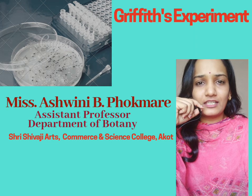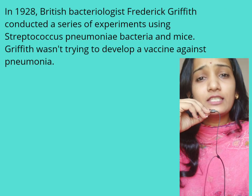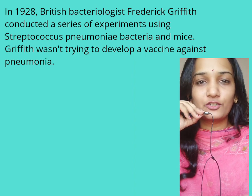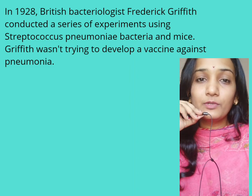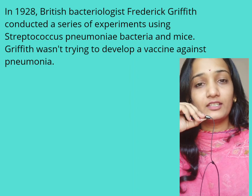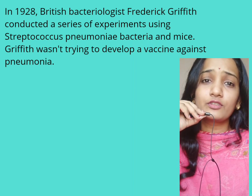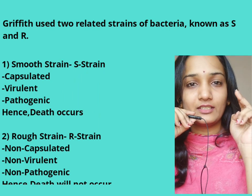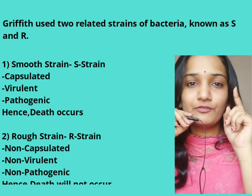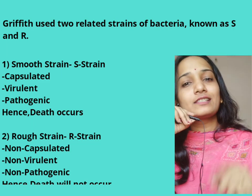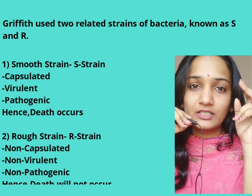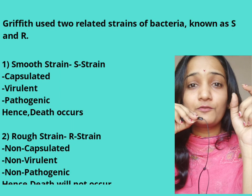So let's see what is Griffith's experiment. This experiment was conducted by Frederick Griffith, who was a bacteriologist. In 1928, people were suffering from pneumonia and the bacteria responsible for this pneumonia was Streptococcus pneumoniae or pneumococcus. So we have taken two strains of bacteria. One was the smooth strain, abbreviated as S strain, which was capsulated, pathogenic and virulent.